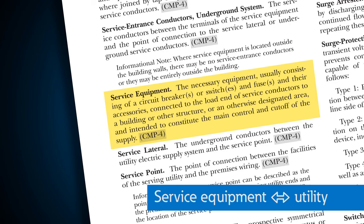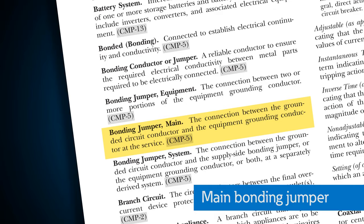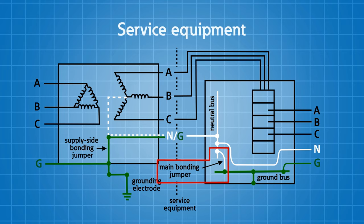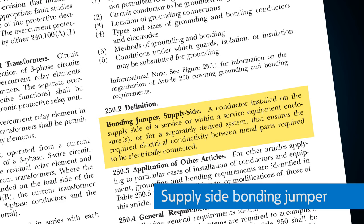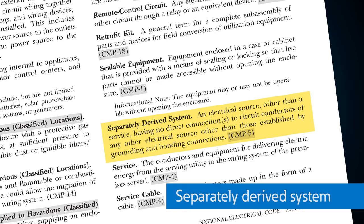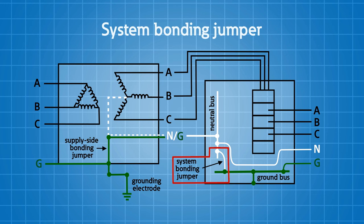At your service equipment — where your utility connects into the power distribution system — we find some very important bonding jumpers. One of those is the main bonding jumper: the connection between the grounded circuit conductor and the equipment grounding conductor, or the supply side bonding jumper, or both, at the service. That's the point where we pull both of those conductors or systems together. The supply side bonding jumper is the conductor installed on the supply side of the service or within service equipment enclosures that ensures the required electrical conductivity between metal parts required to be electrically connected.